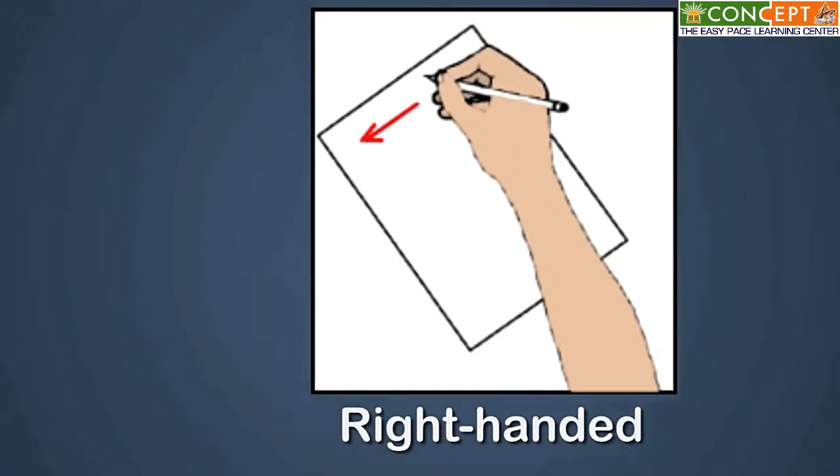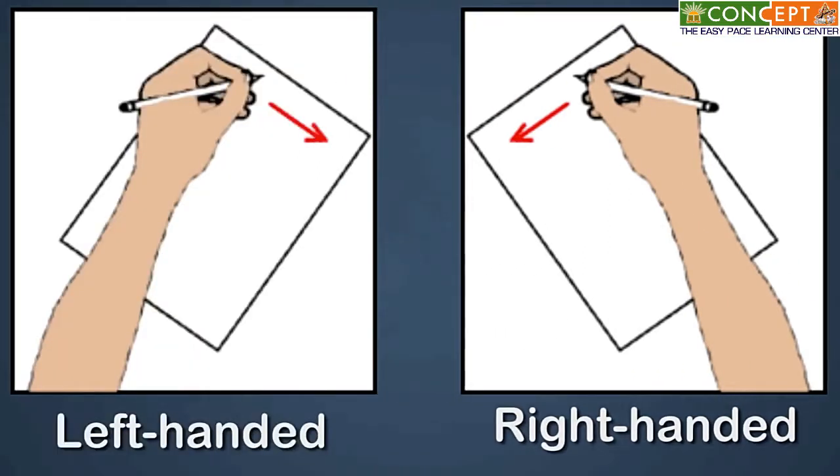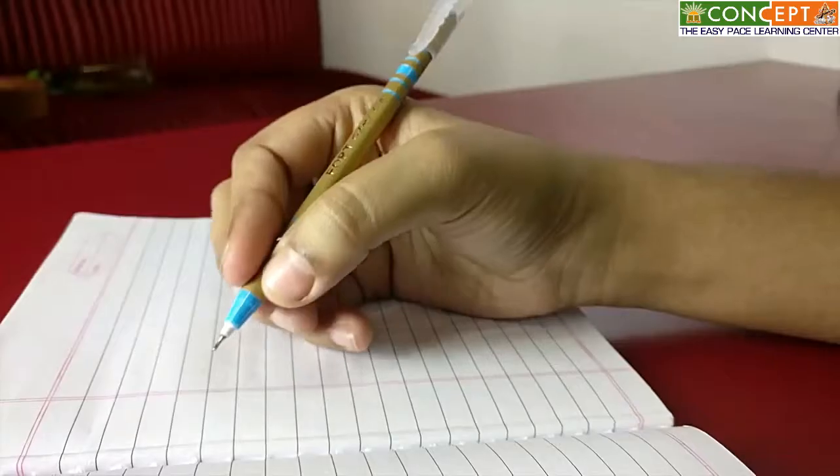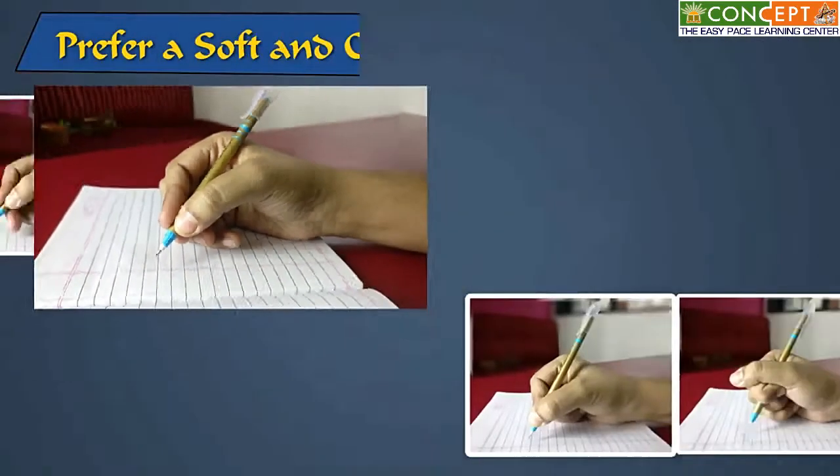If you're a right-handed person, place the right corner of the book or the page high or tilt the page towards your left. And if you're a left-handed person, leave the left corner high or tilt the page towards the right. Next important thing is your grip or the way you hold your pen.